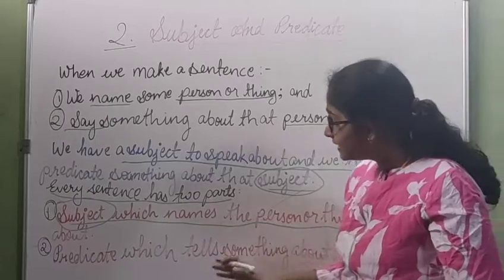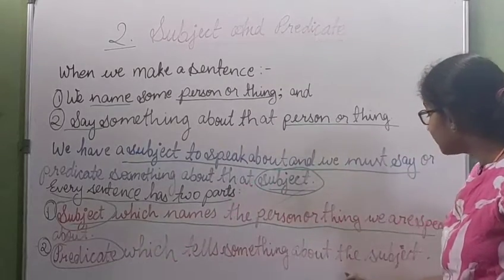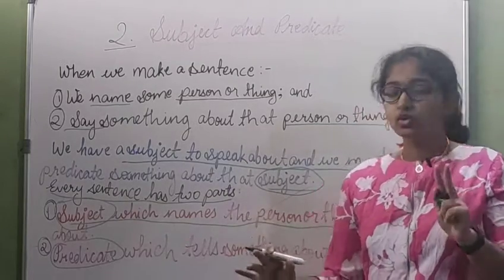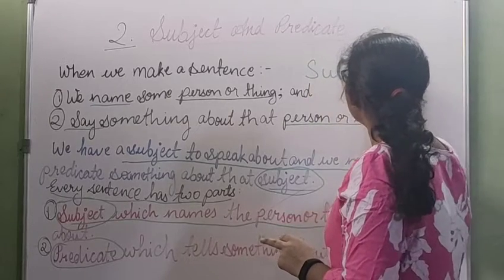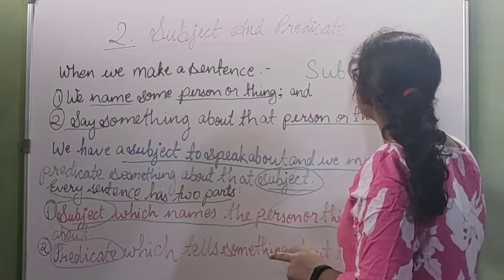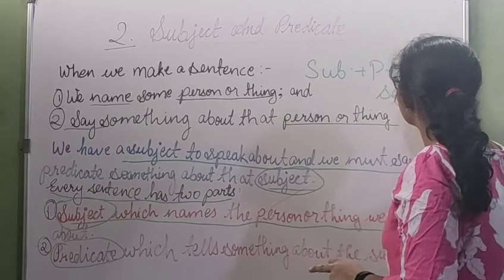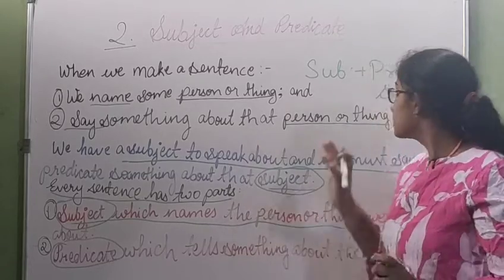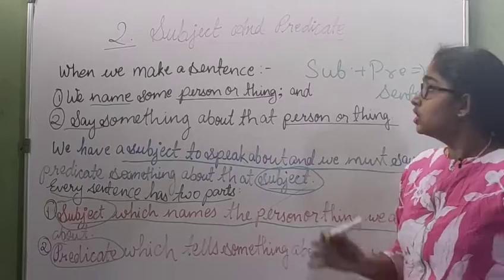Next is predicate, which tells something about the subject. In our sentence, there are two things: subject and predicate. And in subject and predicate, we make one sentence. This is our sentence, and the main two parts are subject and predicate.